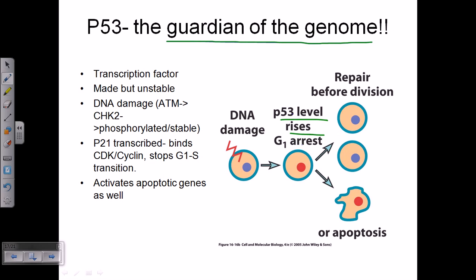At this G1 phase, all the repair enzymes are activated — whether for double-stranded break repair, single-stranded repair, recombination repair, UV damage repair, or radiation damage repair. All those enzymes are upregulated and come to fix the problem. If the problem is fixed properly, P53 level goes down, and it signals other proteins to allow the cell to move from G1 to S phase so division can proceed. P53 ensures everything is perfect before division; it halts the cell at G1 and won't allow it to pass until all damage is remedied.